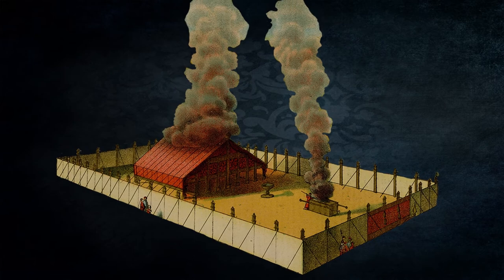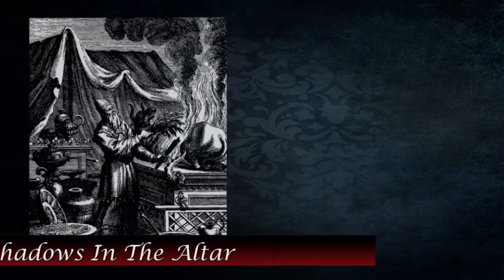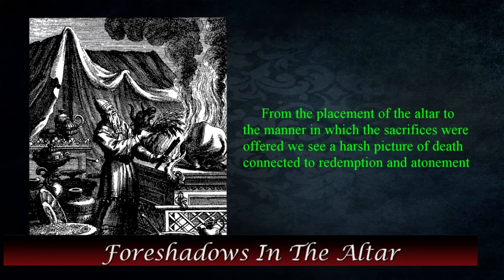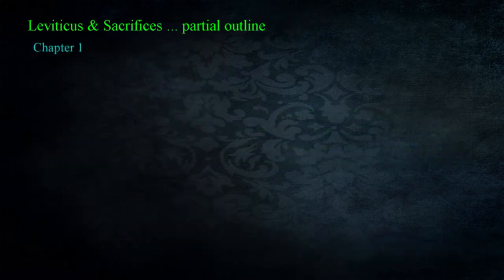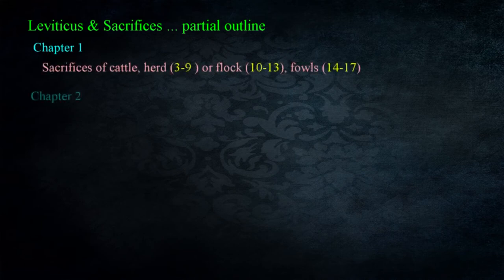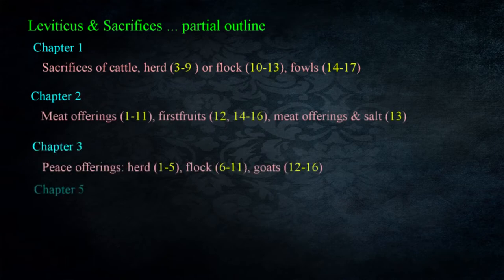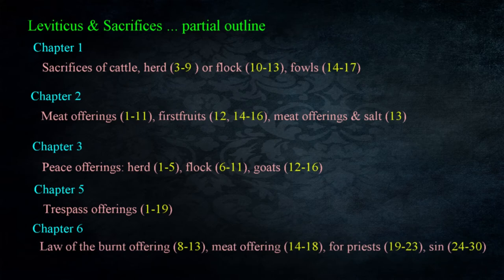There are a number of elements associated with the altar that foreshadow the sacrifice of Christ. From the placement of the altar to the manner in which the sacrifices were offered, we see a harsh picture of death connected to redemption and atonement. Leviticus chapters 1 through 7 detail the steps followed in making a number of sacrifices: the animals were bled, the blood collected by the priests, the animal divided, and the sacrifice burned on the altar. The blood was poured around the base of the altar, sprinkled, or otherwise handled as specified in each particular sacrifice.